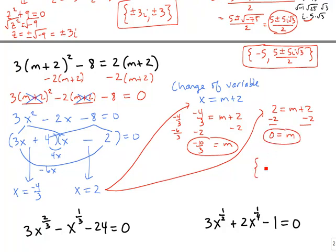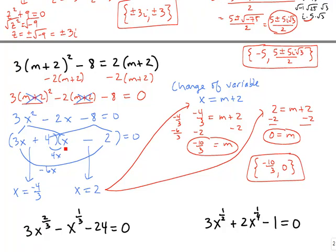But our answers aren't −4/3 and 2 because those are values of x, not m. Back-substituting x = m + 2: when x = −4/3, m = −4/3 − 2 = −10/3. When x = 2, m = 2 − 2 = 0. So our two solutions for m are −10/3 and 0. This is just an alternative to foiling out and combining like terms — it's called making a change of variable.